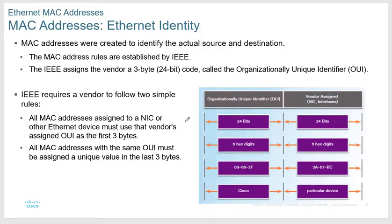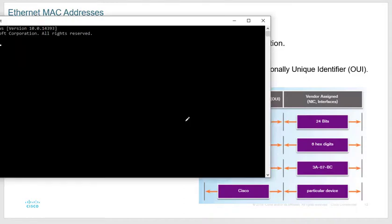A MAC address is 12 digits in hexadecimal — 12 characters of hex. Each character in hexadecimal is 4 bits, so there are 48 total bits in a MAC address. Let me show you what a MAC address looks like on my PC — I'll run ipconfig /all.